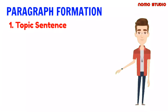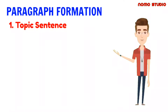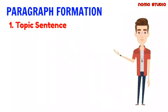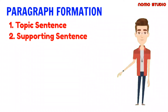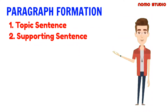A paragraph contains a topic sentence that has supporting details and sometimes a concluding sentence. A good topic sentence tells the reader exactly what the rest of the paragraph is all about. After the topic sentence, supporting sentences follow — this part of the paragraph contains the explanations or examples that expand on or support the topic sentence.